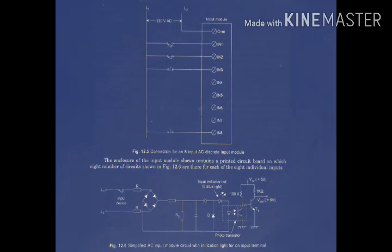When we press the switch — the limit switch or input device — current flows. The resistance drops the voltage. If all your voltage needs conditioning, you pass it through the circuit. You go to R1 and R2, which is the RC circuit. Then R2 filters the DC. It is now a DC circuit.